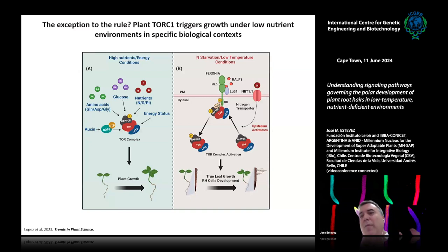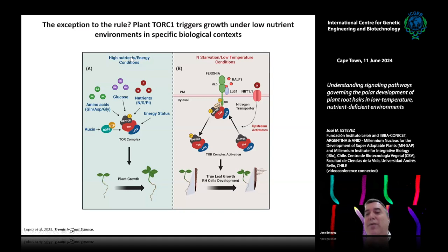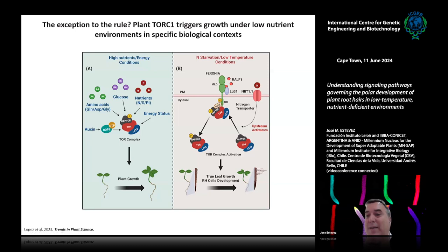We wrote a commentary in Trends in Plant Science about a surprising finding: in all eukaryotic systems including plants, TOR complex is typically activated in a high energy, high nutrient environment — by amino acids, glucose, or nutrients. What we found for root hair is the opposite: TOR is activated when there are low nutrients, low temperature, or low nitrate, and this activates root hair growth. Something is fundamentally different in how TOR is set up in root hair cells compared to the rest of the plant or other eukaryotic systems.